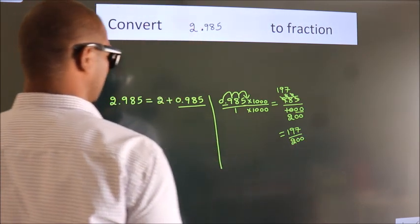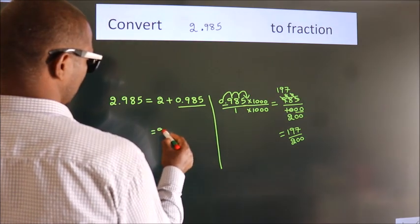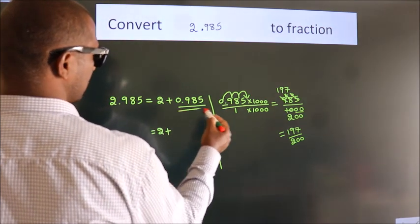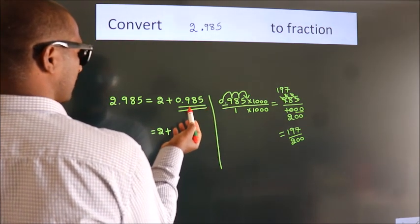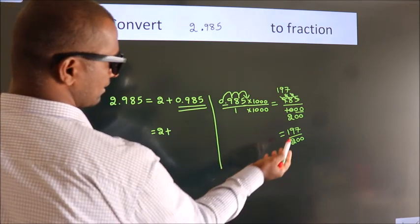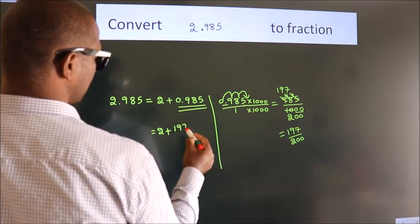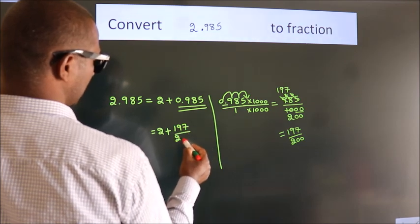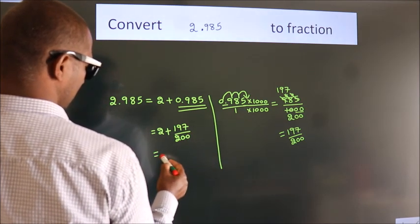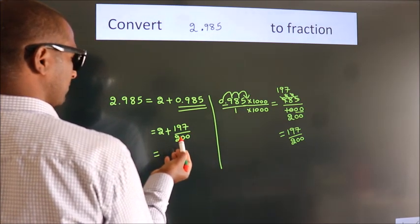Now here, 2 plus, in place of 0.985 we write this fraction: 197 by 200. So 2 plus 197 by 200.